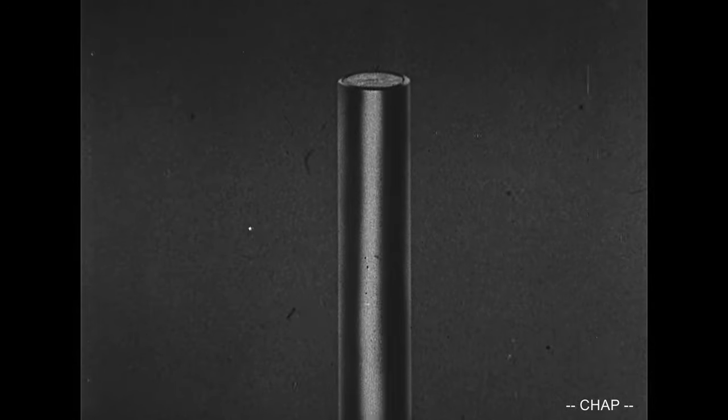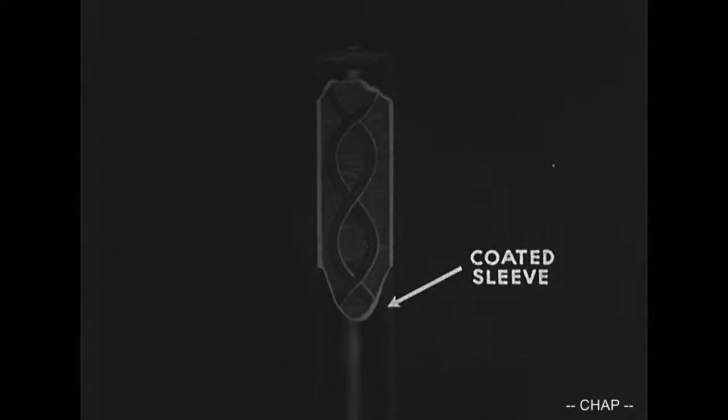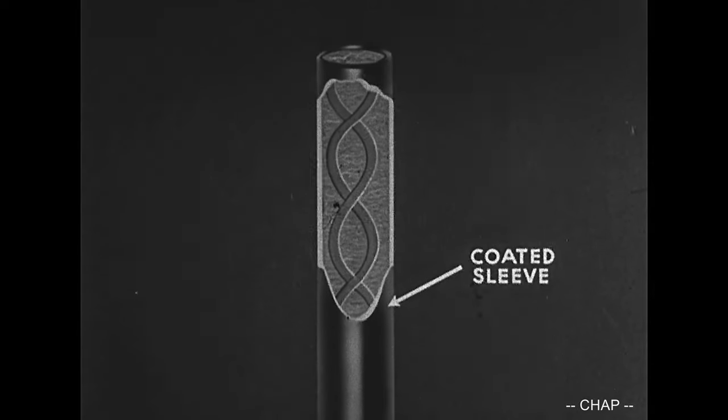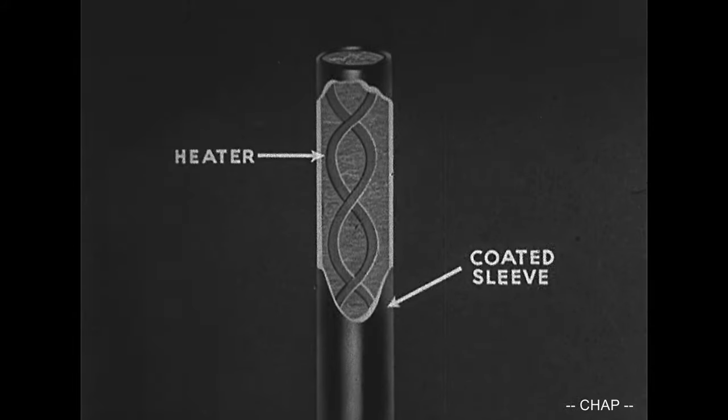Here we see the cathode of a tube after the glass bulb and other elements have been removed. This oxide-coated sleeve or cathode contains the heating element inside. The heater is insulated from the sleeve.